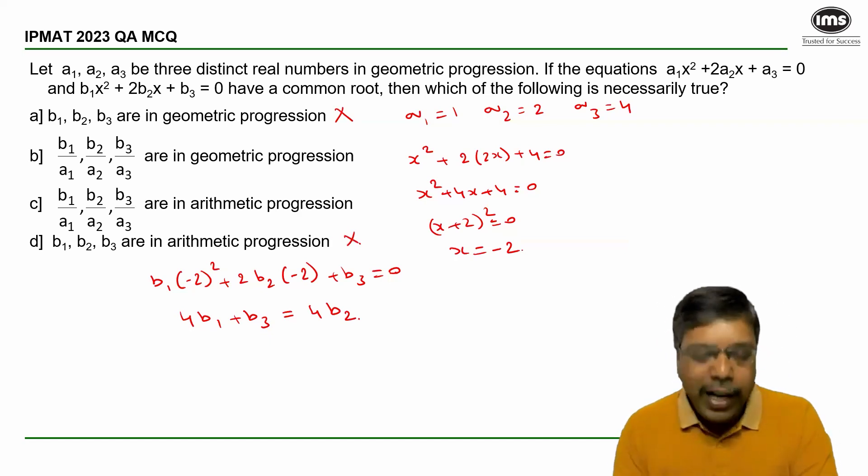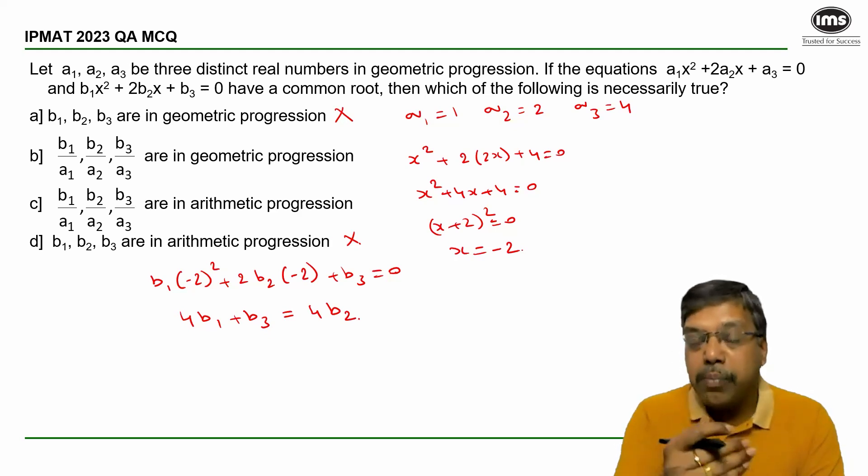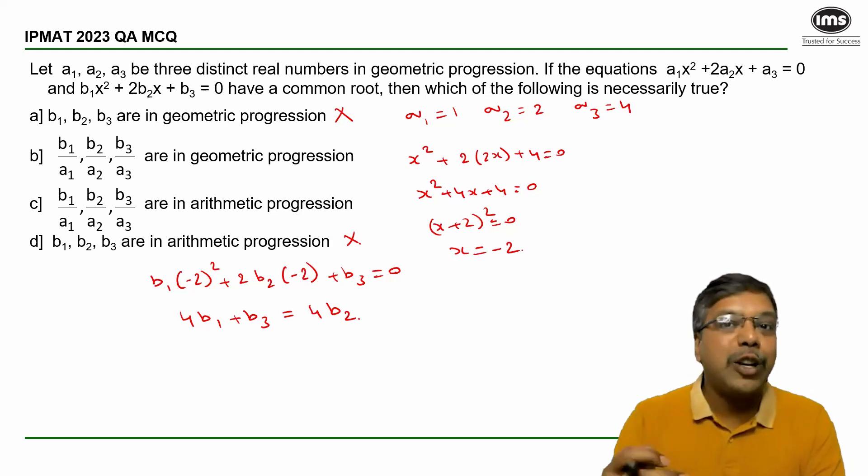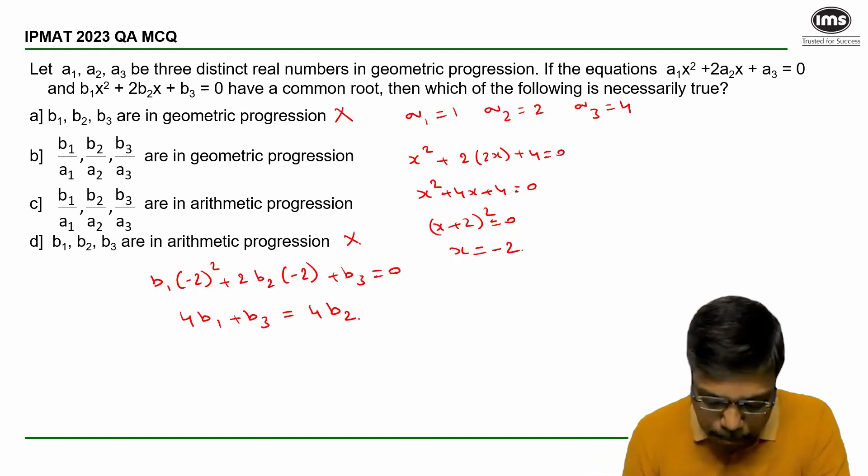Now the remaining two options talk about B1/A1, B2/A2, and B3/A3. So let me try to find a relation between these ratios. I will divide this entire expression by 4, so I get B1 + B3/4 = B2.